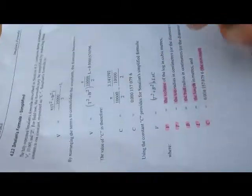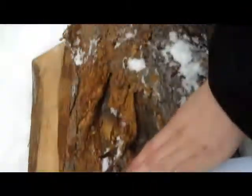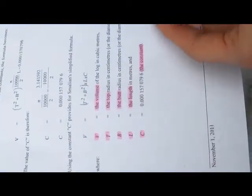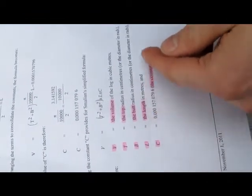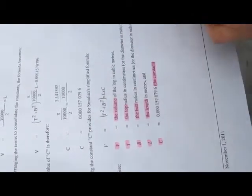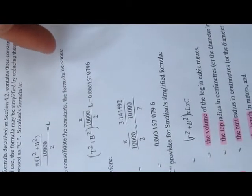Now that we have our measurement from the base on the left-hand side and the measurement from the top on the right-hand side, we can input the numbers into our formula, which has been simplified as we see going down the page. T is the top radius in centimeters, B is the butt radius in centimeters, L is length, and C is the constant. To obtain the constant, we take pi, divide it by 10,000, and divide it by 2. This equals our constant, which is 0.001570796. This number is constant and never changes.